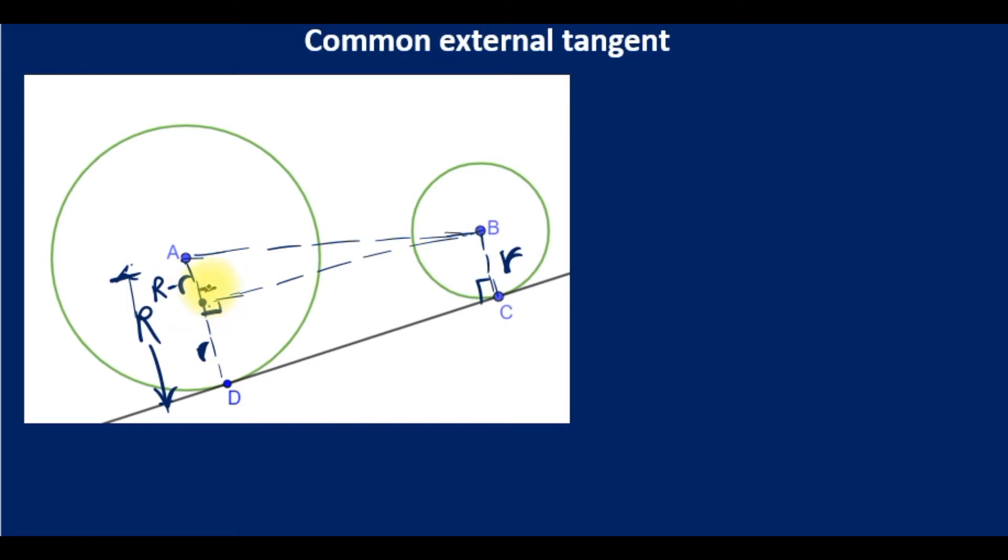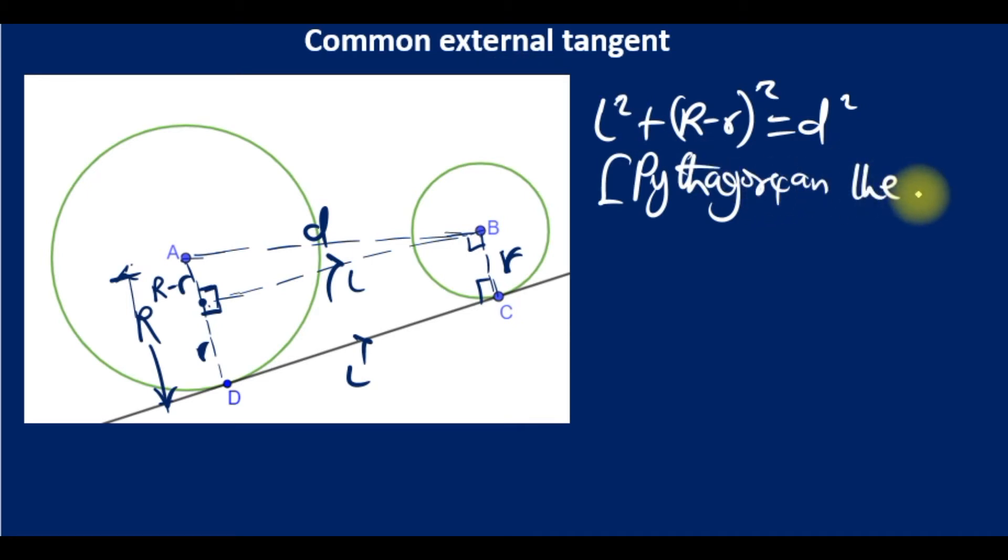notice that will form a right angle triangle. If the distance between centers is d, then using this line parallel to CD, calling this length l, this is also l by observation. Applying Pythagorean theorem, we see that l squared plus (R minus r) squared must equal d squared.